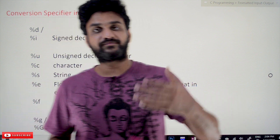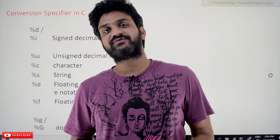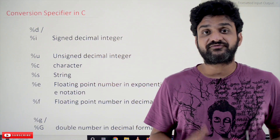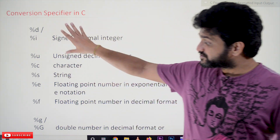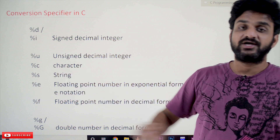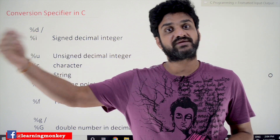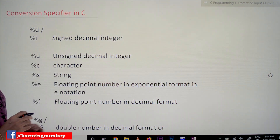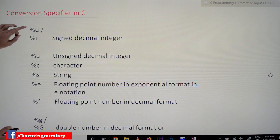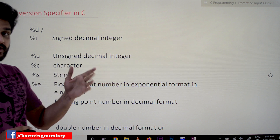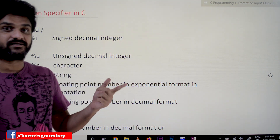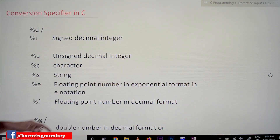In our previous videos we have covered some of the conversion specifiers like %d, %u, and %c. Apart from that there are different other types of conversion specifiers. These are some of the conversion specifiers — not the complete list. We will discuss the remaining conversion specifiers as and when the concept comes. Let's try to have the visualization of each conversion specifier. %d or %i can be used for a signed decimal integer, %u for an unsigned decimal integer, %c for character, and %s for string — which we haven't seen so far.